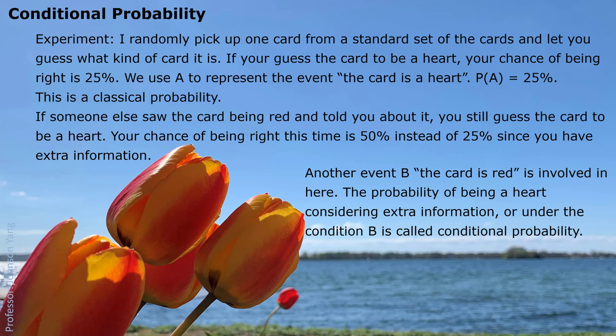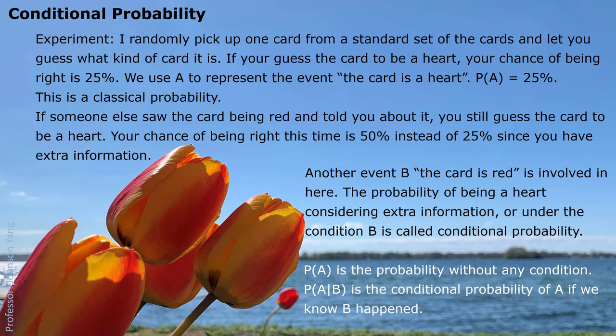Another event B — the card is red — is involved in this situation. So the probability of being a heart, considering extra information or under the condition B, is called conditional probability. P(A) is the probability without any condition. We use different notation for conditional probability: we use a vertical line to separate the two events. Event B follows after this vertical line. That is called the conditional event — given that B has already happened.